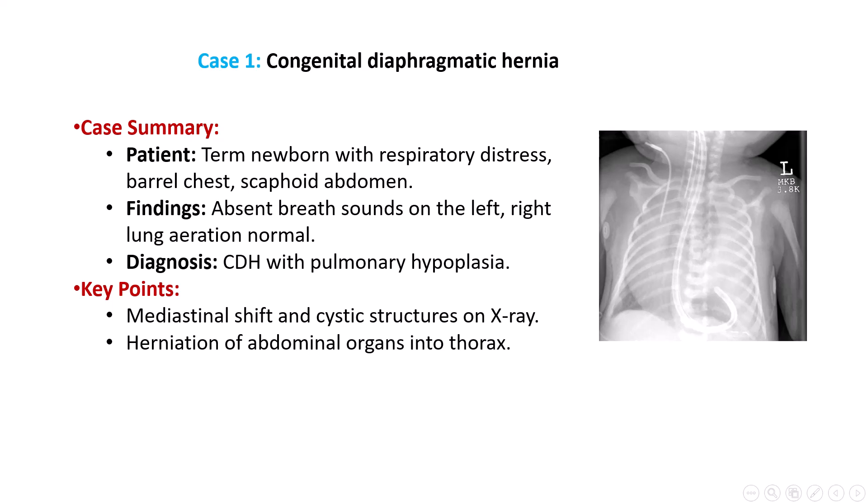This failure leads to an abnormal communication between the thoracic and abdominal cavities, most commonly on the left posterolateral side, allowing abdominal organs such as the bowel, stomach, and spleen to herniate into the thoracic cavity. This herniation compresses the developing lung, resulting in pulmonary hypoplasia, a critical concern in newborns presenting with CDH.